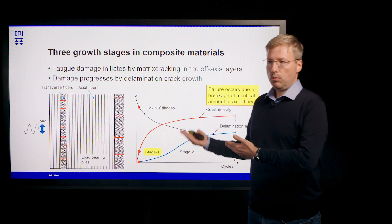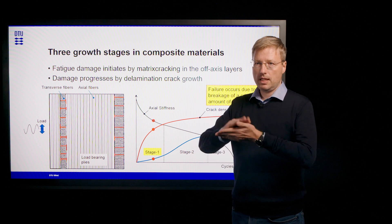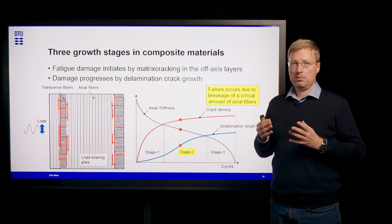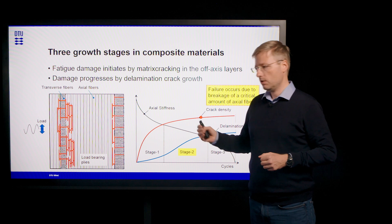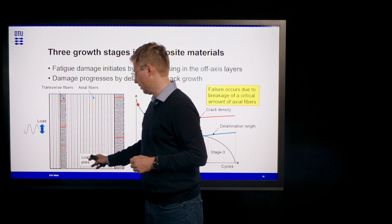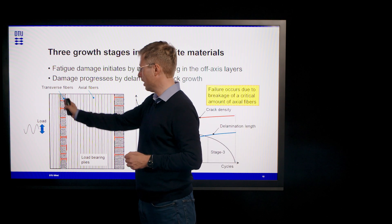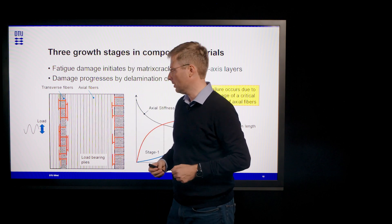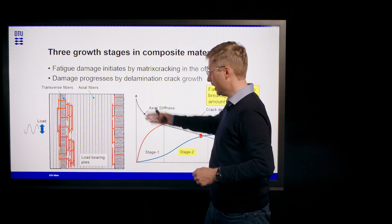Now we can take one of those plies as we call it shown in the previous slide and stack them on top of one another. And then we can form what is called a composite laminate. So in this composite laminate shown in here, we have fibers that are oriented in the loading direction. We call them the load bearing plies. So we have these axial fibers. But we also have fibers which are in this case perpendicular to the axial fibers and we call them transverse fibers or cross plies.